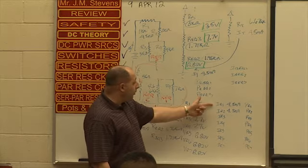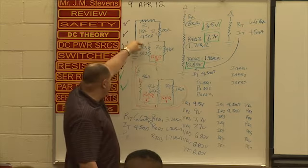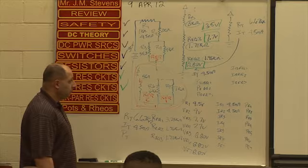What do we need to do now? We can find our branch currents. Well, we know IR1 and IR2 because they're the series portion. Currents count, it's the same as I total. Good.